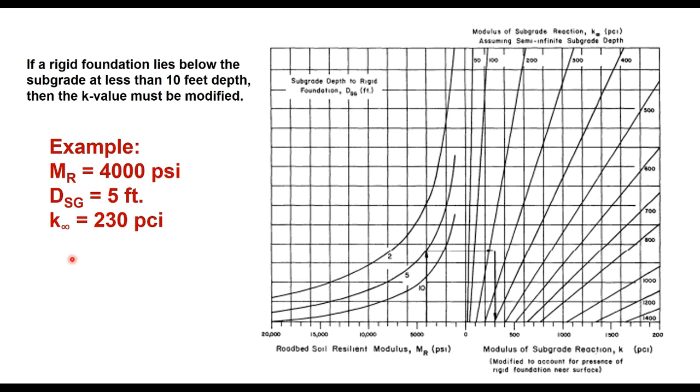Here we start from this horizontal line, that is the roadbed soil resilient modulus M_R value of 4,000. Corresponding to 4,000 and corresponding to d_SG equal to 5 feet, we draw a horizontal line here.